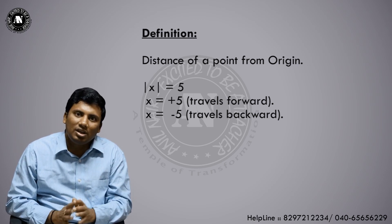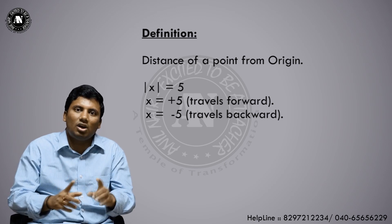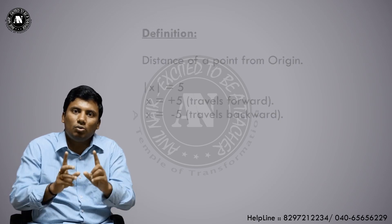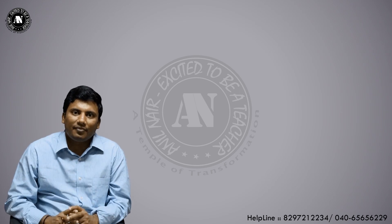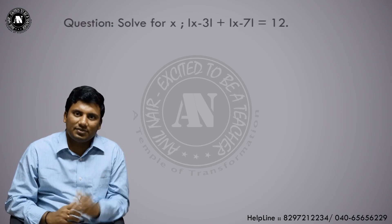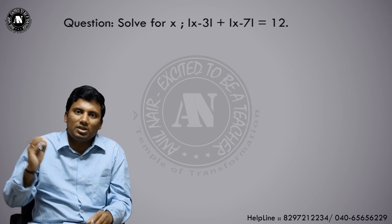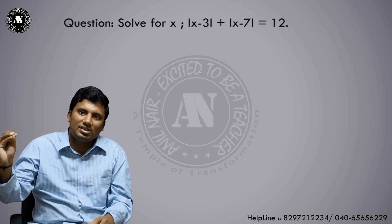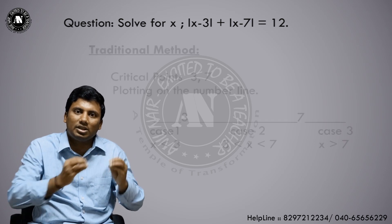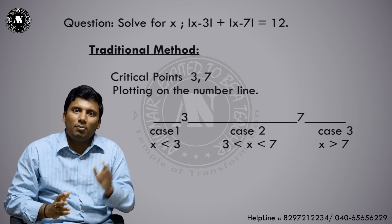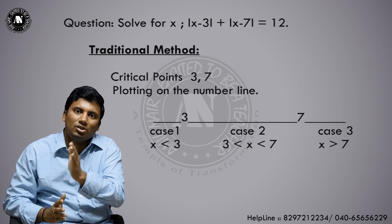Having understood the definition of a modulus function, let us solve a question with two modulus functions. Question: solve for x. Mod(x - 3) + mod(x - 7) = 12. This is the traditional method, Method 1.